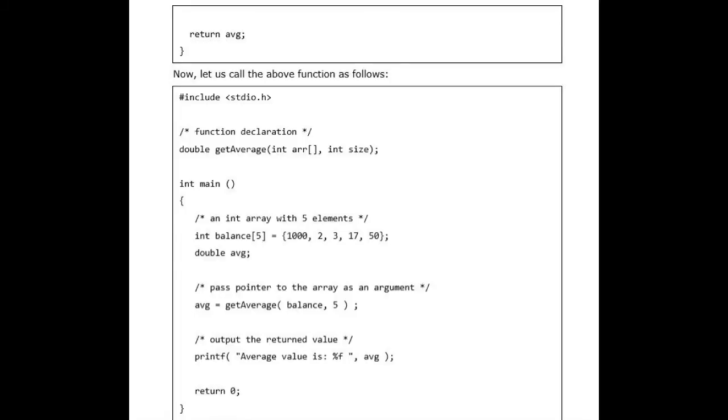Return array from a function: C programming does not allow to return an entire array as an argument to a function. However, you can return a pointer to an array by specifying the array's name without an index.